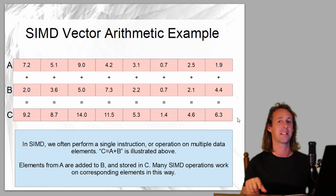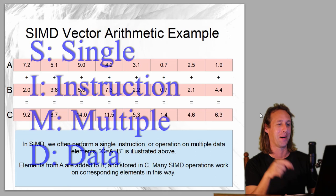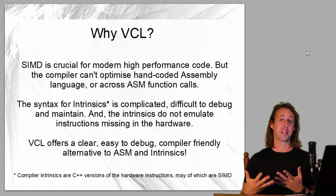The good thing about SIMD is that this operation happens all at once, and this is where SIMD gets its extraordinary performance from. SIMD is a type of parallelism, something like multi-threading, but a different type of parallelism. In SIMD we provide one instruction - in this example, addition - and the same instruction is performed on multiple data. Single instruction, multiple data. That's what SIMD basically is.